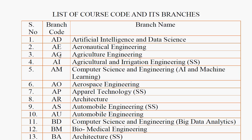This university and its affiliated colleges have a total of 95 courses — exactly 95. If you have selected courses, they may be repeated. For example, in positions 9 and 10, it will be automobile engineering, but if you have a normal automobile engineering, you will have a back-end SS — self-supporting. There is a normal fee structure for self-supporting courses.